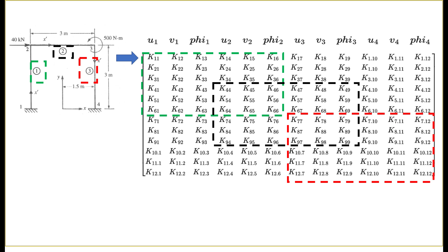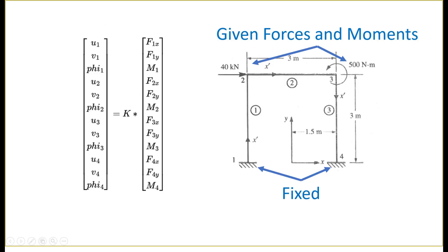The local stiffness matrix for element 1 defines the first six rows and columns of the global stiffness matrix, bounded by the green rectangle. The next six rows and columns starting from the third row and third column are defined by the second element, bounded by the black rectangle. The global stiffness matrix is then used to develop the 12 equations shown here in matrix form.